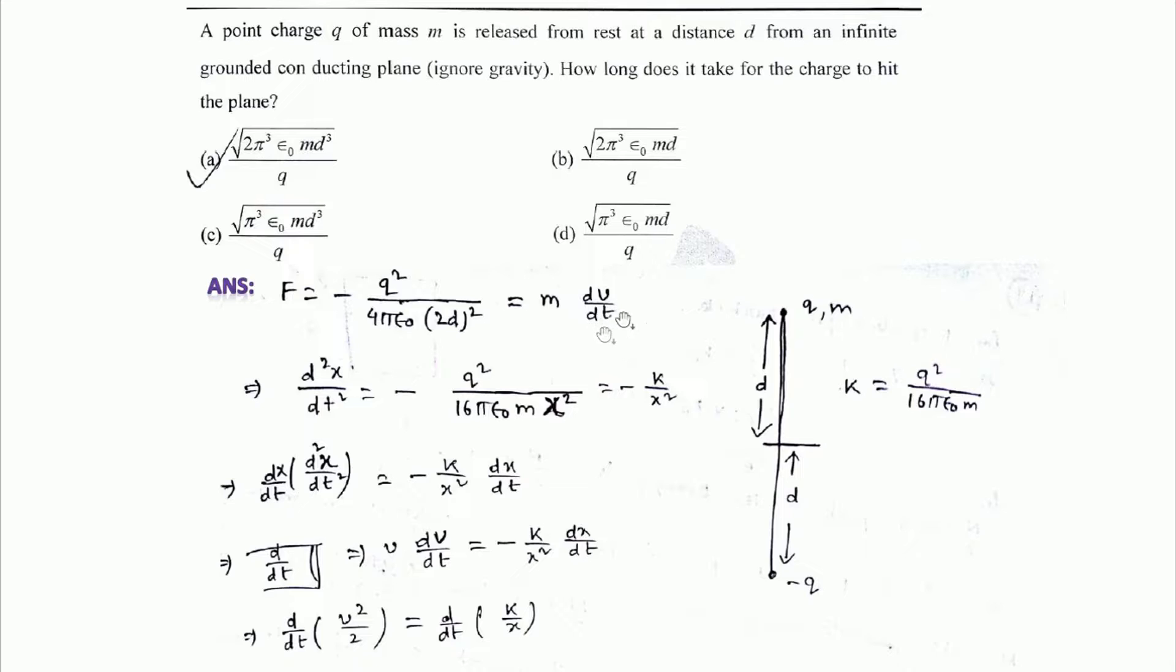Therefore d²x/dt² equals dv/dt equals dx/dt. This becomes q² / (16πε₀mx²). We are not writing d, we are writing in general term x.